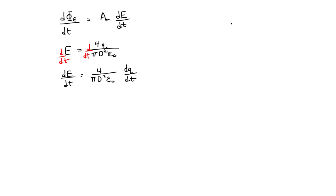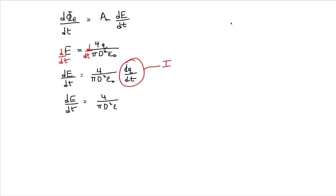Look at this expression: dq/dt. That's the time rate of change of the charge accumulation on the capacitor plate, and that is just the current being led into the capacitor plate. So now we have an expression for the electric field actually in terms of the current in the wire being used to charge the capacitor.